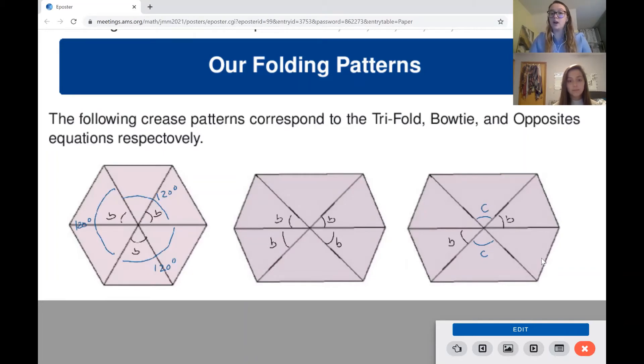So the left one is for the generalized trifold, the middle one is for the generalized bow tie, and the right one is for the generalized opposites.